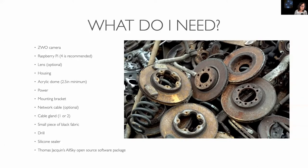These are the things you're going to need: a ZWO camera, a Raspberry Pi — I used a Pi 4 but you can use an older Pi — and a lens. The ZWO camera will come with an all-sky lens, but you might want a wider field lens. You'll need a housing, an acrylic dome — two-and-a-half inches is the smallest, but a three-inch probably makes more sense — some way to get power into the box, a mounting bracket, possibly a network cable if you're not using Wi-Fi, and one or two cable glands depending on how many cables you're running into the box.